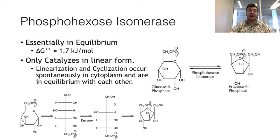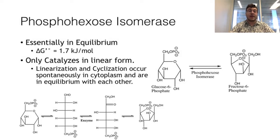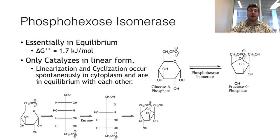The second step is catalyzed by phosphohexose isomerase. This enzyme isomerizes the phosphorylated G6P molecule into fructose-6-phosphate, both of which are hexoses. The only significant difference between glucose and fructose is an aldehyde or ketone carbonyl group. The reaction of linear to cyclic and cyclic to linear sugars occurs through a spontaneous equilibrium, similar to a gem-diol reaction. Phosphohexose isomerase will only catalyze the sugars in their linear form.